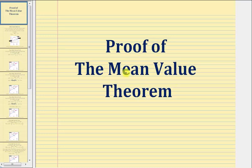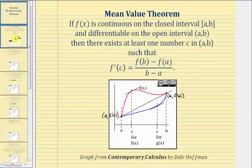Welcome to a proof of the mean value theorem. The mean value theorem states that if f of x is continuous on the closed interval from a to b and differentiable on the open interval from a to b, then there exists at least one number x equals c in the open interval from a to b, such that f prime of c equals the quantity f of b minus f of a divided by the quantity b minus a.